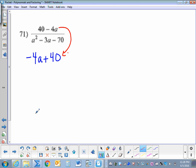Number 71. Here we have a binomial that's not written in standard form. Go ahead and rewrite it as negative 4a plus 40, and see if that will work. Factor the trinomial and eliminate top to bottom.